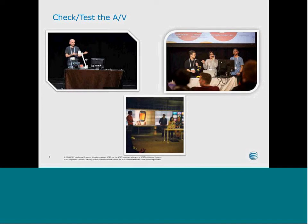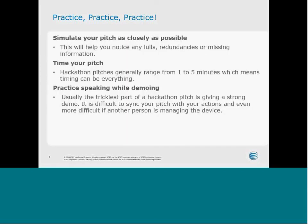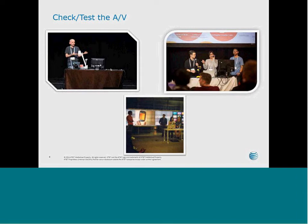Make sure you check or test the AV prior to pitching. AV at events can vary pretty dramatically, so you never know what you're going to be able to do on stage. The most common limitation is the inability to show two screens simultaneously — outside of very large venues, it's rare to have two projectors and two screens. Also ask whether there's audio available to show a video or the audio that is in your app.